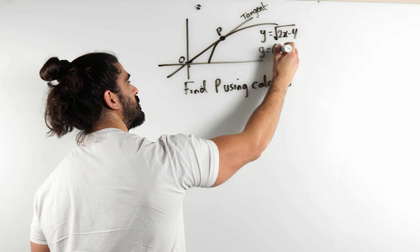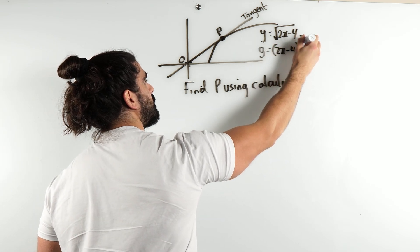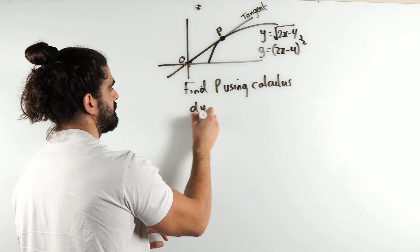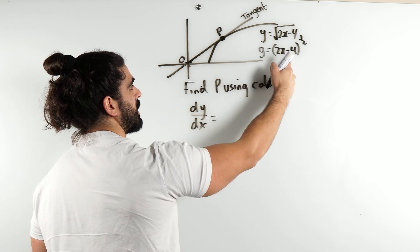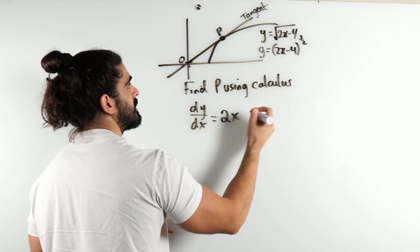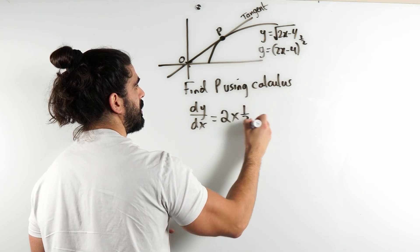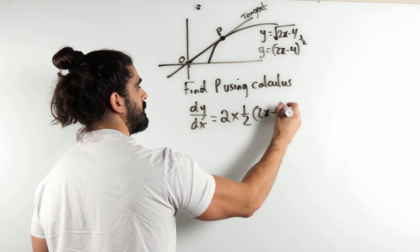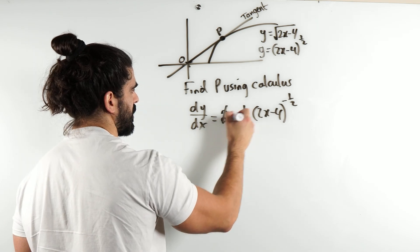This is y equals 2x minus 4 to the power of a half. So, differentiating, we differentiate what's inside the bracket first. That's 2 times, bring down the power, half, knock one off the power, minus half. So, the 2 cancels the half.